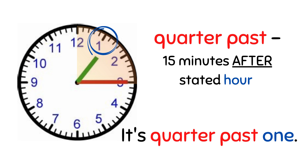Quarter past means 15 minutes after the stated hour — the minute hand has passed the stated hour by 15 minutes. For example, the picture shows quarter past one.